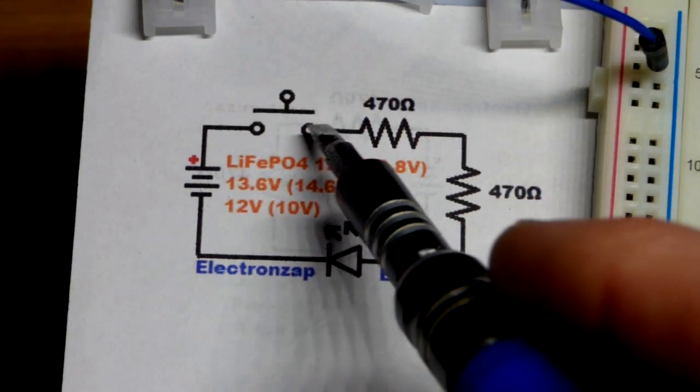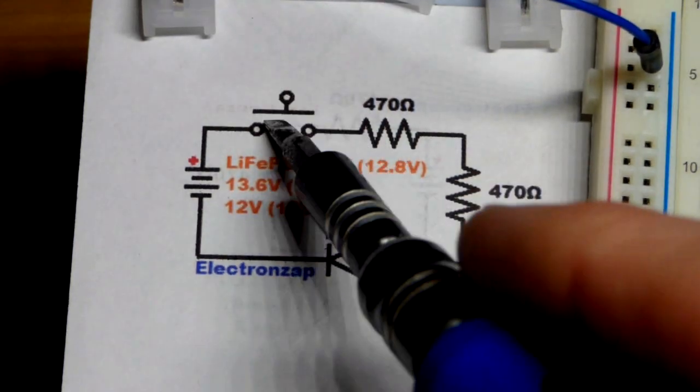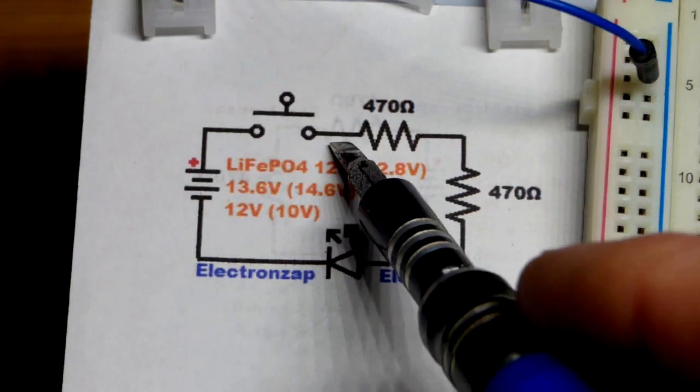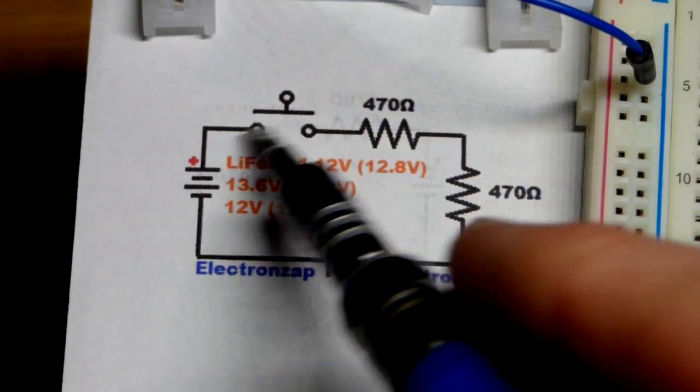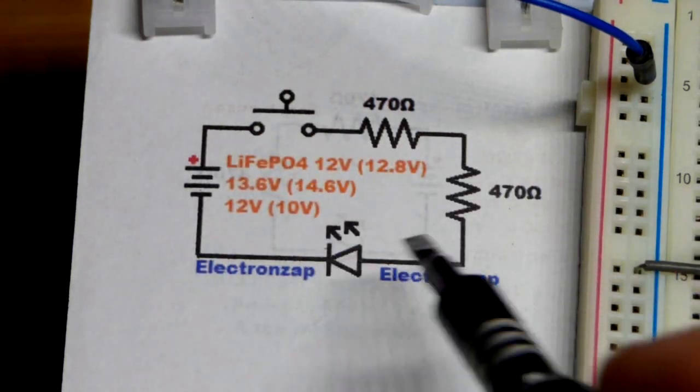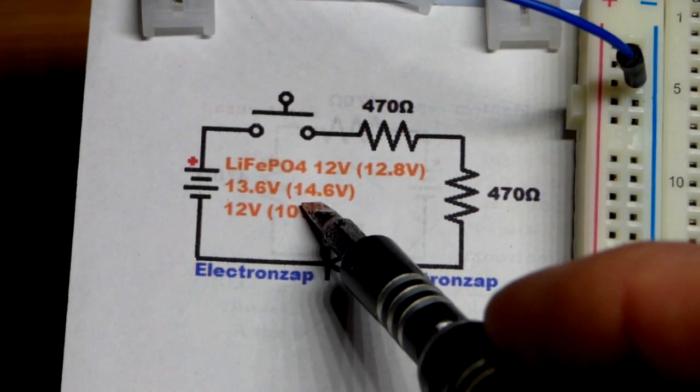But when the switch is open, of course, no current can flow. There's a gap. You press the button, sometimes I illustrate this, it lowers the conductive area between two other conductive areas and bridges the gap. Then current can flow like that.